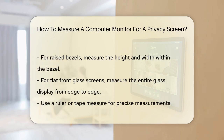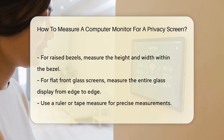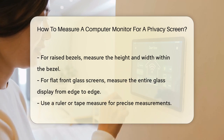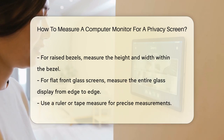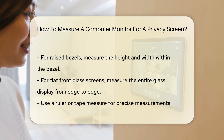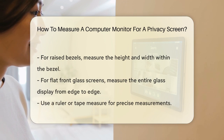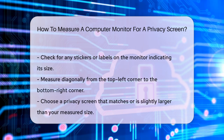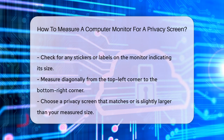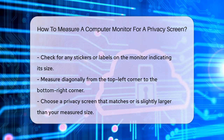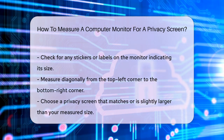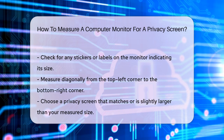For a precise measurement, use a ruler or tape measure. If your monitor has a sticker or label indicating its size, that's a good starting point, but it's always a good idea to double-check. Measure from the top left corner to the bottom right corner, or vice versa, to get the diagonal measurement. This will give you the exact size you need for your privacy screen.